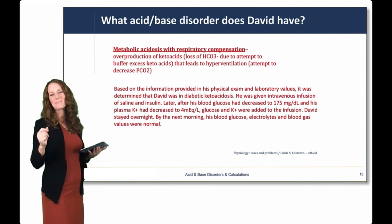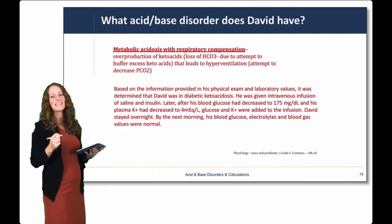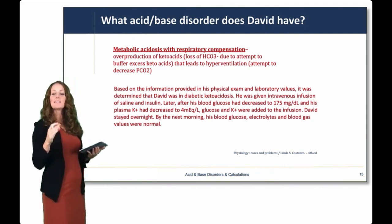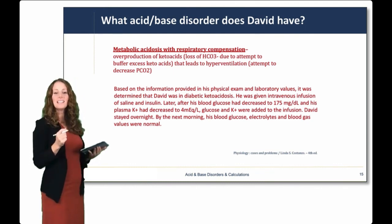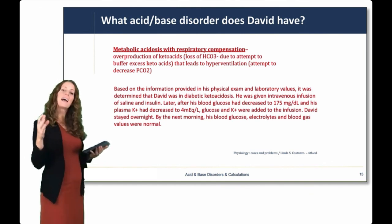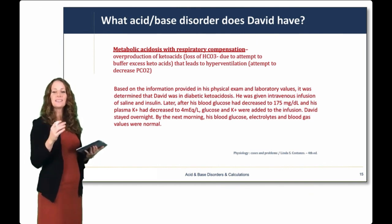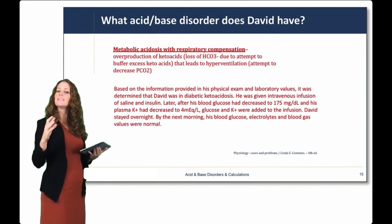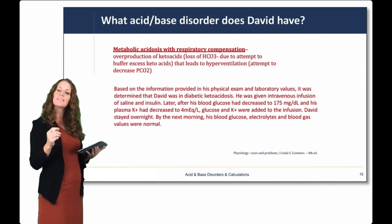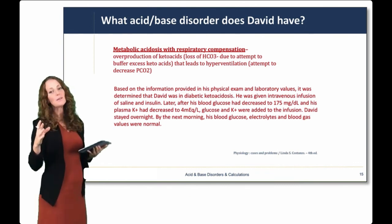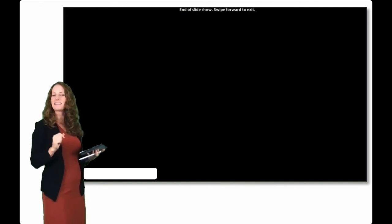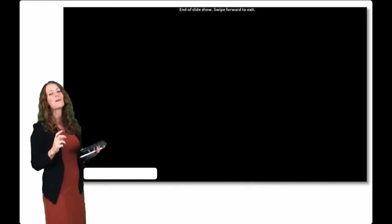So, what acid-base disorder does David have? He has a metabolic acidosis with respiratory compensation, very likely due to overproduction of keto acids causing a loss of bicarbonate as bicarbonate attempts to buffer those excess keto acids — leading to hyperventilation as compensation to decrease the CO2. Based on his physical exam and lab values, David was determined to be in diabetic ketoacidosis. He was given an IV infusion of saline and insulin. After his blood glucose and plasma potassium decreased, glucose and potassium were added to the infusion. David stayed overnight, and by the next morning his blood glucose, electrolytes, and blood gas values were back to normal.